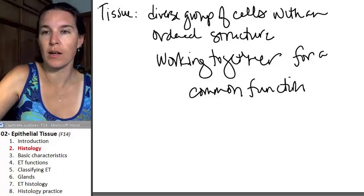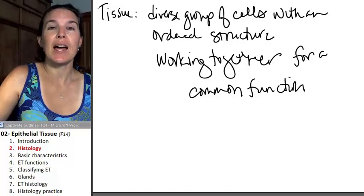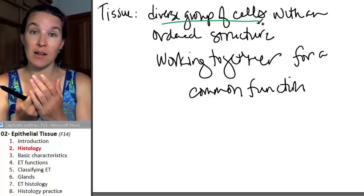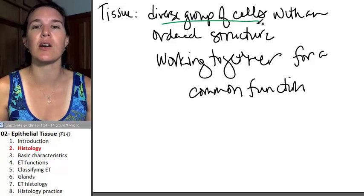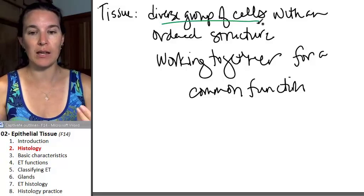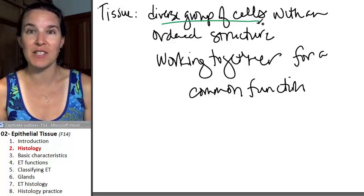Let's break it down. What exactly does that mean? A diverse group of cells. We know that the cell is the first level of organization that displays the characteristics of life. We also know that in the human body there are a ridiculous number of different types of cells.